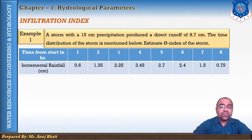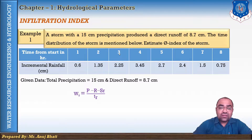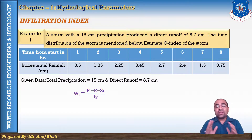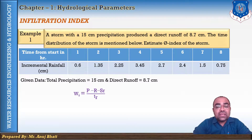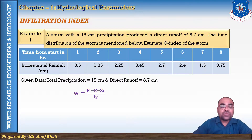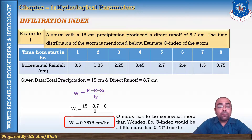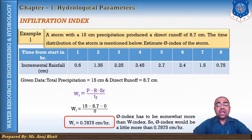For the w index, we need P, R, SR, and TR, where P is total precipitation = 15 cm, direct runoff R = 8.7 cm, surface retention SR = 0 (no mention given), and TR is the total time duration = 8 hours. Substituting: w index = (15 − 8.7 − 0) / 8, which gives a w index value of 0.7875 centimeter per hour.